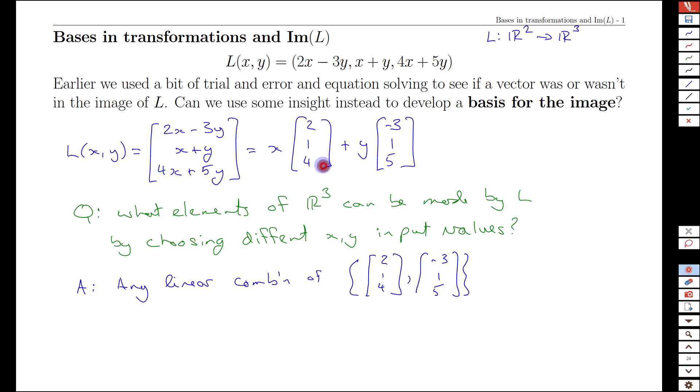No matter what x and y we pick for input, we get multiples of these two building block vectors defined by the transform itself. A corollary is that if any vector in the image can be made as a linear combination of these elements, then the set {[2, 1, 4], [-3, 1, 5]} is a spanning set for the image of L—these are all the possible outputs. Now we're halfway to our goal.